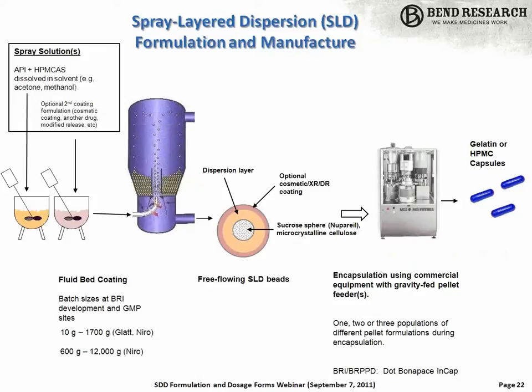We also practice spray layer dispersions quite a bit, which is a fluid bed approach — spray layering a dispersion onto a bead. Typically you'd use sugar spherical cores or cellulose cores and put a layer of dispersion on them. On top of that, you can add controlled release layers such as CAP, EC, or HPMC, or an enteric layer — so there's a lot of flexibility in constructing the bead layers. These beads are very amenable to placing right into a capsule. This is an approach we use quite often to get that combination of solubilization and controlled release.